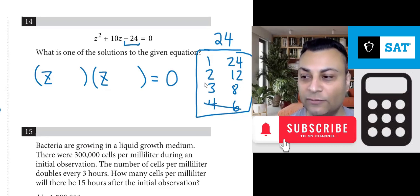3 and 8 will never make a 10. 1 and 24 will never make a 10. So 2 and 12 will make our 10. And how do we do that? We need a positive 12 and negative 2.